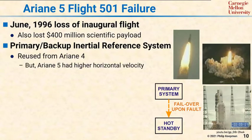But there was a problem: the Ariane 5 got a high horizontal velocity more quickly than the Ariane 4. Inside the inertial navigation system was a function that was not even necessary for the Ariane 5, but was left in place so that they wouldn't have to change the inertial navigation system.